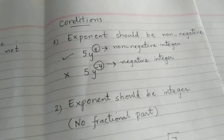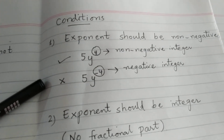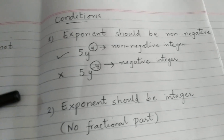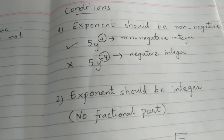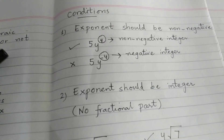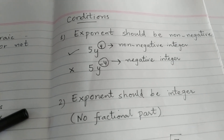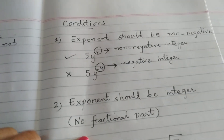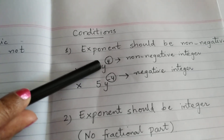Now, what are the conditions? The conditions are: first, the exponent should be non-negative. To understand polynomial versus non-polynomial expressions, the first condition is that the exponent should be non-negative. Here you have 5y with exponent 4.